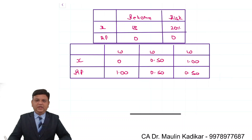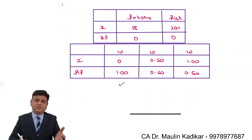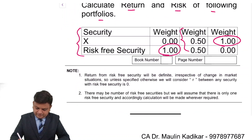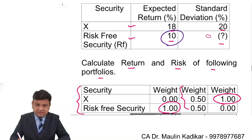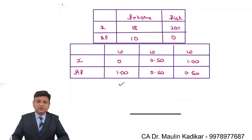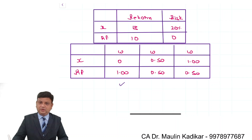In the first portfolio, you have invested only in the risk-free security. In that case, the return of your portfolio would be 10% and the risk of your portfolio will be 0%. So the return is 10 and standard deviation is 0.